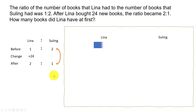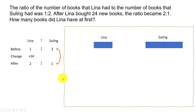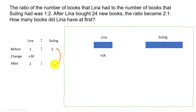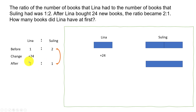Let's look at this from a diagrammatic perspective. Before, Lena had one unit and Su Ling had two units of the same size. Then Lena purchased 24 more books. Looking at Su Ling — she had two units before and one unit after, but the quantity did not change. So the size cannot change; instead of being represented as two units, it is represented as one unit. That is what Su Ling had at the end.